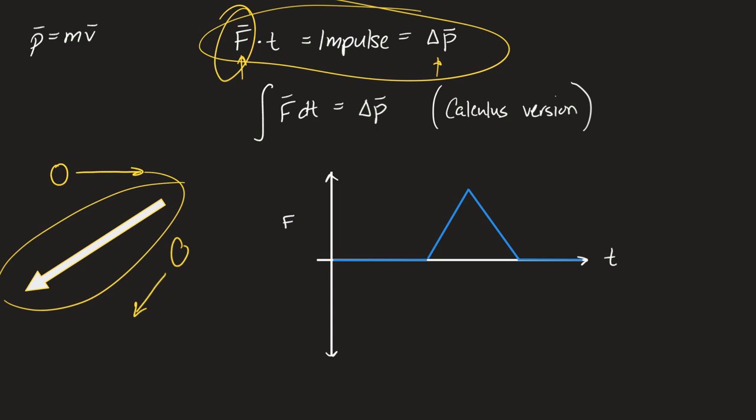Impulses are always due to unbalanced forces. Unlike work, where any individual force can do work, impulse causes changes in momentum, and a change in momentum only occurs if there's an unbalanced force. It's just the way the math works.